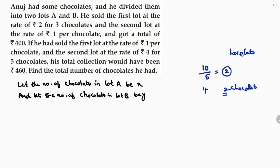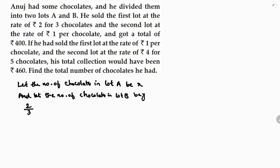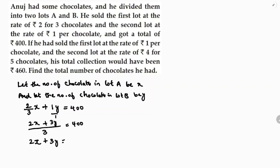In the same way, the price of one chocolate from lot A is 2 by 3, and the number of chocolates is X. From lot B, the price is Rs. 1 per chocolate and the number is Y. He got Rs. 400 total. Taking LCM of 3, we get the first equation: 2x + 3y = 1200.